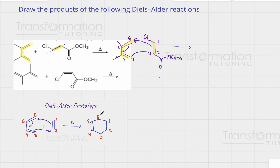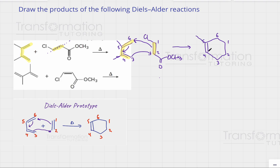Next, I'm going to draw the product. I always draw a cyclohexene, and we're going to number it the same way following my example. If you number this molecule randomly, you will not get the correct product — you must be consistent. I am done with the product for the diene and dienophile core, and I need to make sure I didn't miss any of the atoms or groups attached.